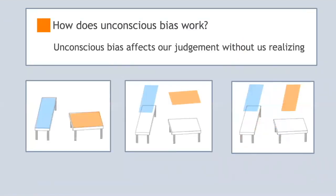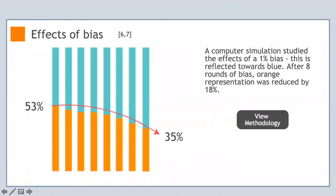Unconscious bias affects our judgment without us realizing. For example, just by looking at them, these tables appear to be different sizes. However, in reality, they are the same size. A computer simulation was used to study the effects of a 1% bias towards the color blue over the color orange. Over eight rounds of bias, this resulted in a drastic change in the representation of each color, with the representation of orange being reduced by 18%.